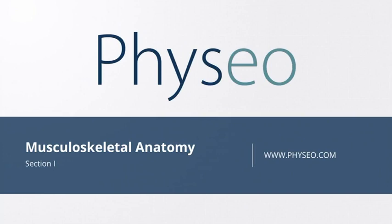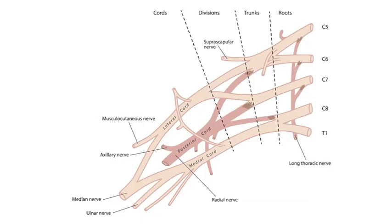Welcome to section 1 in musculoskeletal anatomy. In this section, we will be discussing the brachial plexus. Here's an image of the brachial plexus, which can be found in section 1 of your musculoskeletal anatomy text. Notice that there are many nerves that aren't labeled — this is intentional. The labels you do see indicate very important nerves to remember.